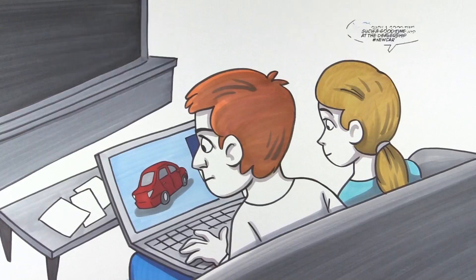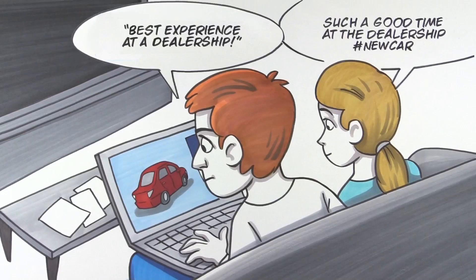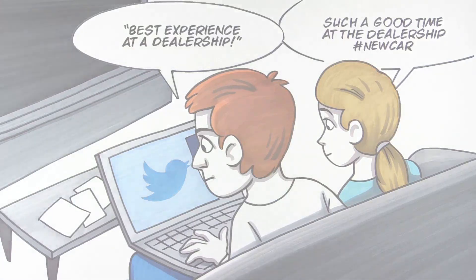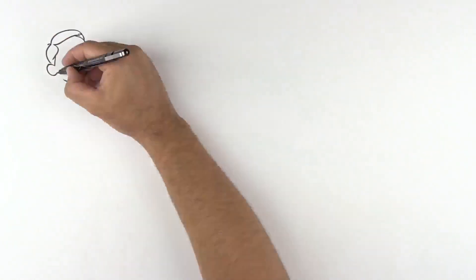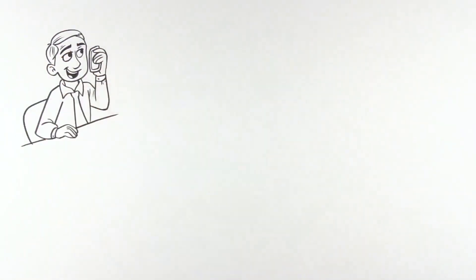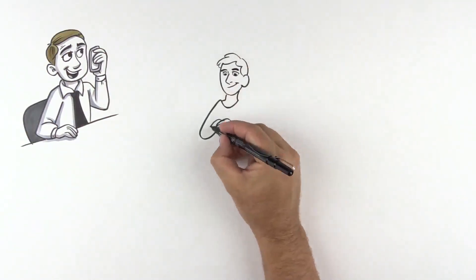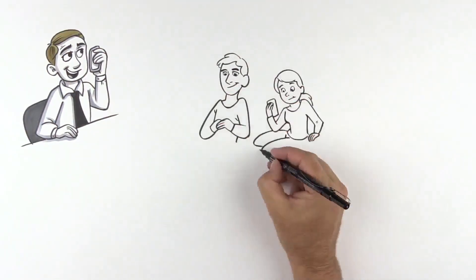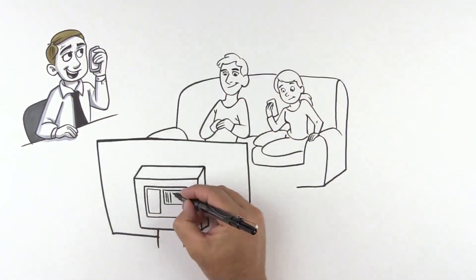The consumer schedules an appointment on your website for a test drive and gives most of their information now to help save them time when they're at your dealership. The lead is automatically routed to your appropriate salesperson on their smartphone. Your sales manager calls your customer and has easy access to all their details in your CRM system.